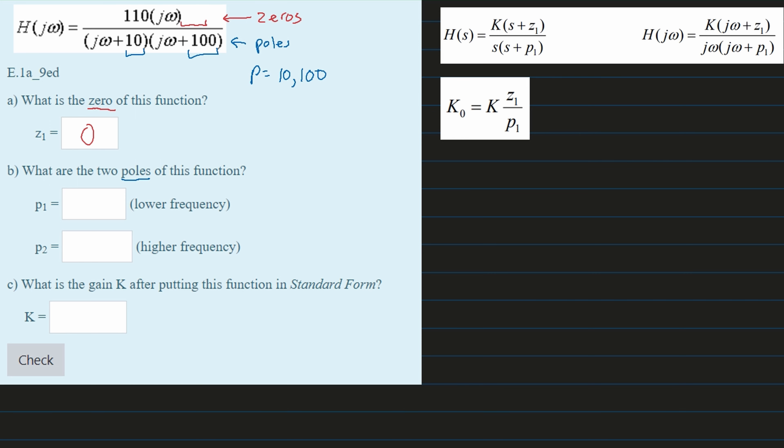The lower of the two is 10. So we're going to set p1 equal to 10. And then our p2 is 100.